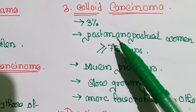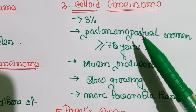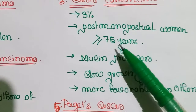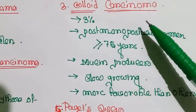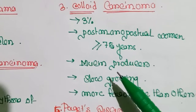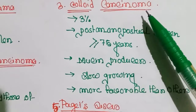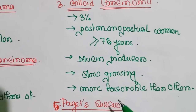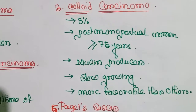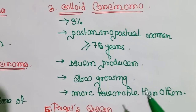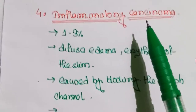Colloid carcinoma accounts for about three percent of breast cancer. This type often presents in postmenopausal women greater than 75 years old. This carcinoma produces mucin, so it is also called mucinous carcinoma. It is slowly growing, and thus the prognosis is more favorable than many other types.